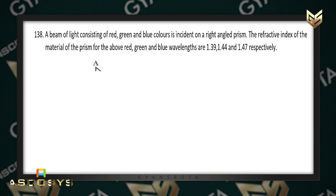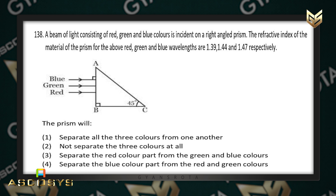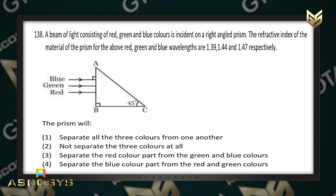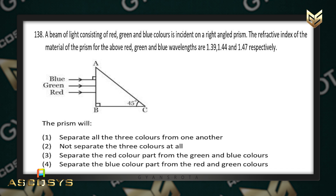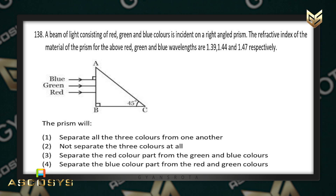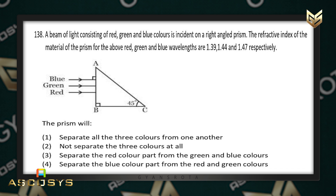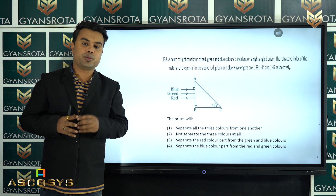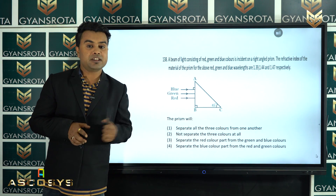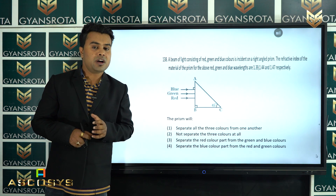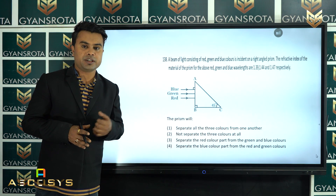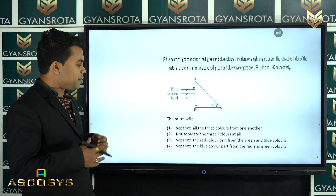Question 138: a beam of light consisting of red, green, and blue colors is incident on a right-angle prism. The refractive indices for red, green, and blue wavelengths are 1.39, 1.44, and 1.47 respectively. This question is from ray optics on total internal reflection — also found in NCERT. We need to check which color will not undergo total internal reflection and will thus be separated from the others.